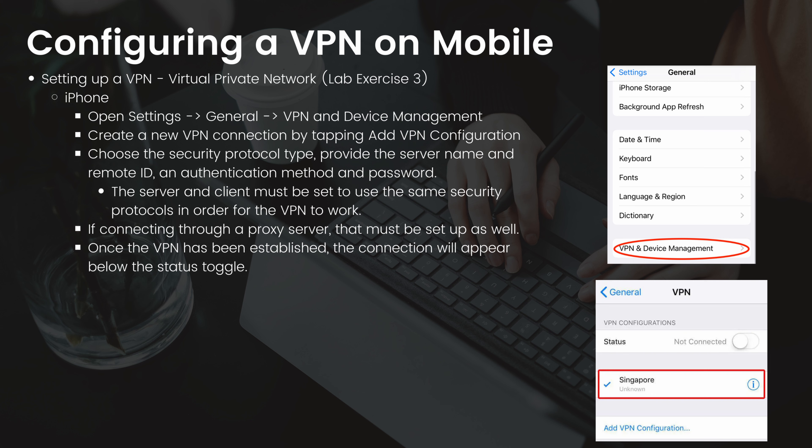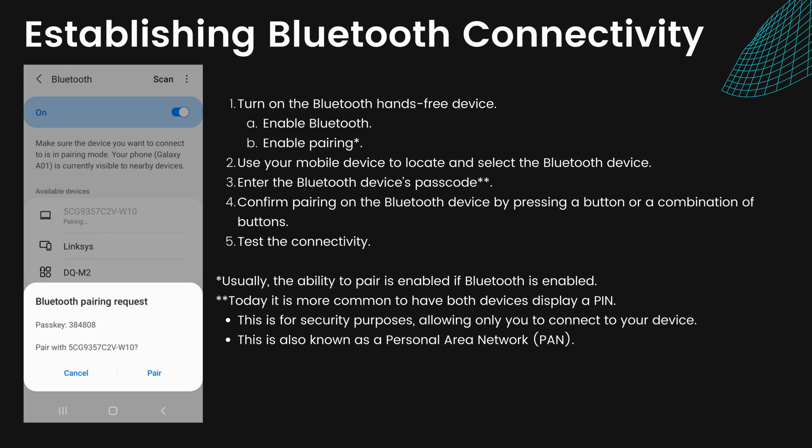To establish a Bluetooth connection on iOS or Android: enable Bluetooth, which automatically starts the pairing process. Use your mobile device to locate and select the Bluetooth device you want to connect to. Enter the Bluetooth device's passcode — today it is more common for both devices to display a PIN so you can verify you're connecting to the correct device. Confirm pairing on the Bluetooth device by pressing a button. Then test connectivity by watching a video or listening to audio to confirm the connection is working.